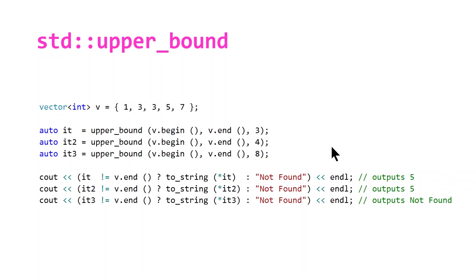If you're searching for a value that doesn't exist in your data structure, upper_bound and lower_bound are essentially equivalent. Also worth noting: lower_bound and upper_bound can both accept a fourth parameter for a custom comparator as well.